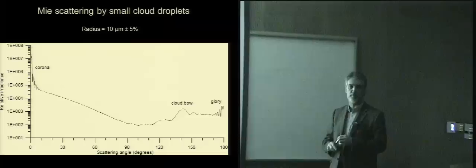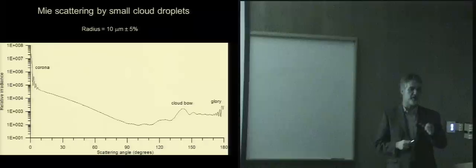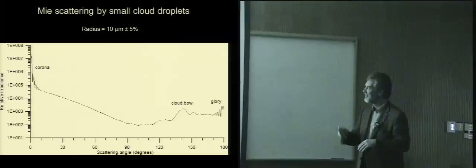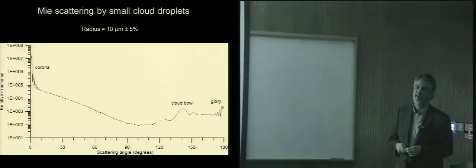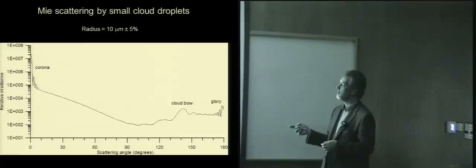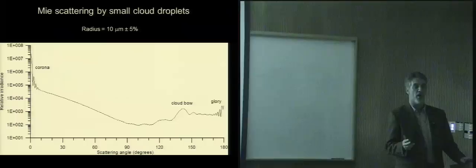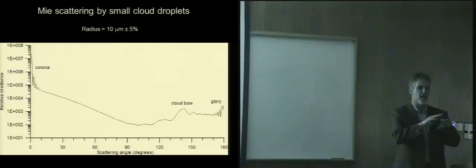Now let's go to cloud droplets. Previously we looked at raindrops; now we look at cloud drops — much smaller particles, still Mie scattering because still larger than the wavelength, but smaller than a raindrop. A typical cloud droplet is around 10 micron radius. The variety of rainbow sharpness you see has a lot to do with the size of the raindrops — some will have very vivid, sharp colors; some will be almost pastel.